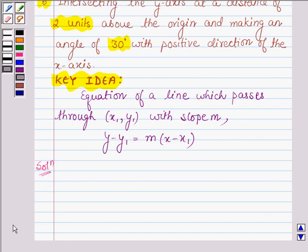Now here we are given that the line intersects the y-axis at a distance of 2 units above the origin. So this is 1 unit and this is 2 units. Now the name of this point is 0, 2, that is here the x-coordinate is 0 and the y-coordinate is 2. So the given point is 0, 2.